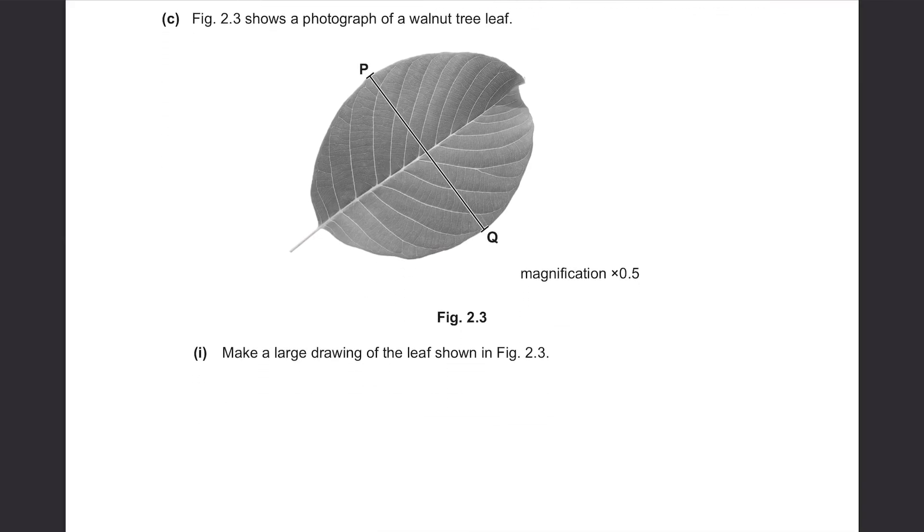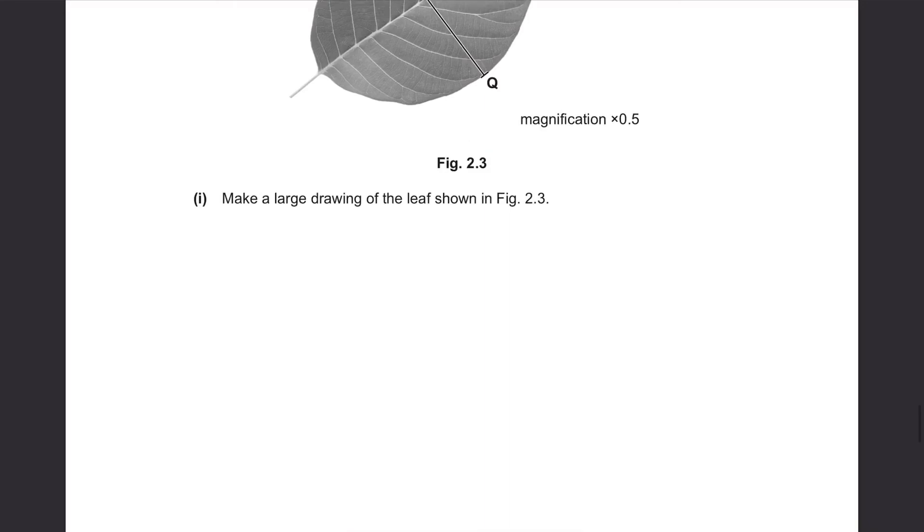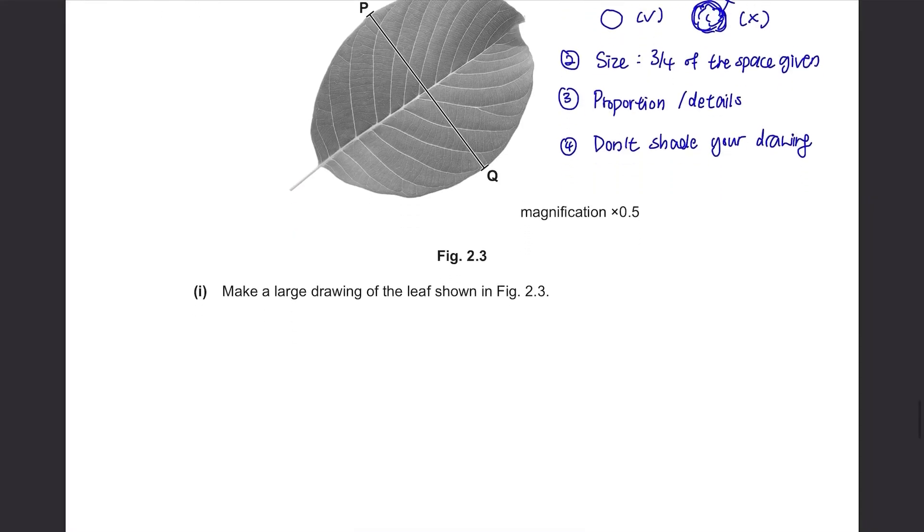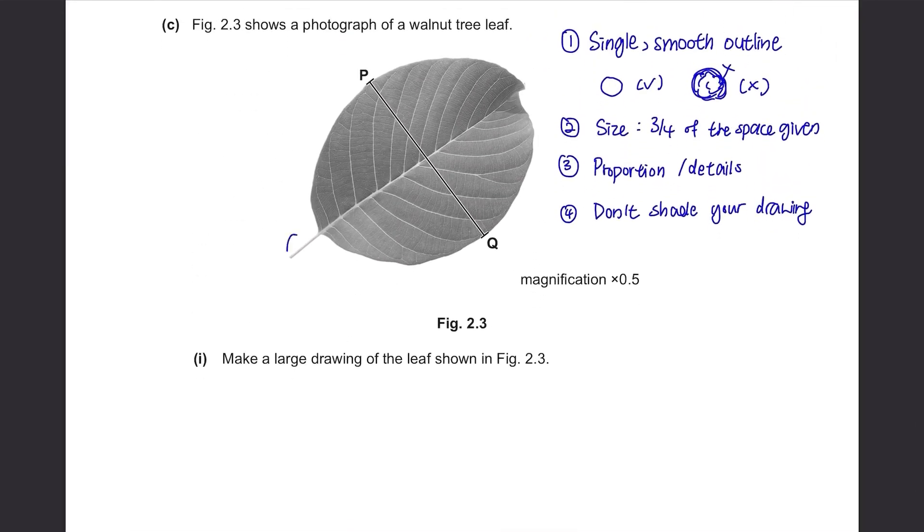Part C. Figure 2.3 shows a photograph of a walnut tree leaf. Make a large drawing of the leaf shown in Figure 2.3. Well, if you have watched my Paper 61 and 62 videos, you already know the rules. But I'll just state them again. Firstly, everything should be a single smooth line. So no double lines like this. This is definitely wrong. And next, the size. It should occupy at least 3 quarters of the space given. Usually a large space is given, so you have to make it big enough to fill up the space. Then the proportion or the detail should be accurate. If this part is small, then draw it small or thin. And you see some details here. You have to draw these lines as well. And lastly, never shade your drawing. This diagram does look dark and you feel like you have to shade it but never do that. You will lose marks if you do that.